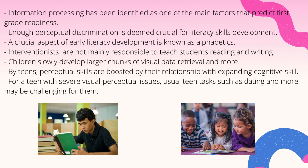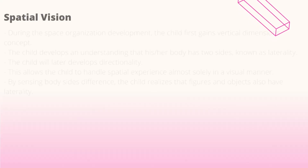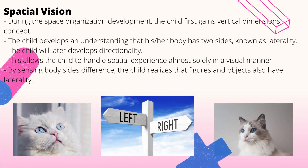Teenagers can imagine, create, and construct complex forms. For a teen with severe visual perceptual problems, usual teenager tasks such as dating, driving a car, or even playing with a pet may be challenging. Regarding spatial vision, during spatial organization development, the child first gains the vertical dimension concept, followed by horizontal dimensions. Oblique and diagonal dimensions are more complex, and perception of these spatial coordinates matures later.